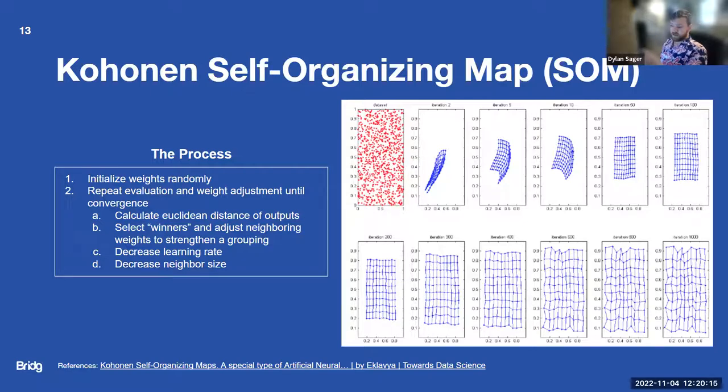We can see a visual representation of this. You see the data set in red on the top left here. You can see iteration two after a random initiation of weights. Still pretty clustered together, we'd like to see more separation. Over every iteration it spreads apart until it reaches iteration a thousand, which you can see it's much more spread apart than when it started.